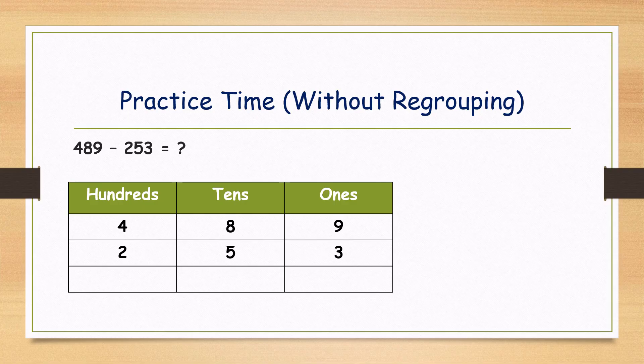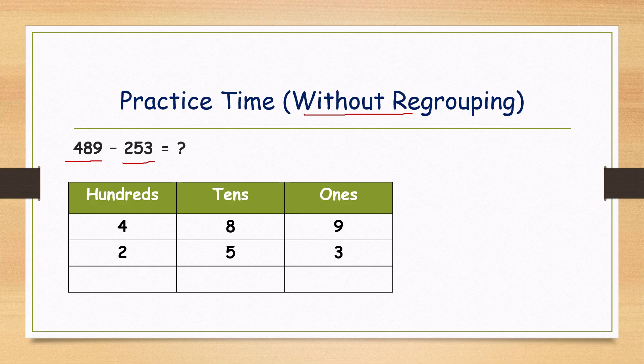Here is practice time. First, without regrouping example. We are taking four hundred and eighty-nine minus two hundred and fifty-three. I arranged it in the table already. I'm giving thirty seconds. Time starts now. Okay, is it done, kids? I will tell the answer.